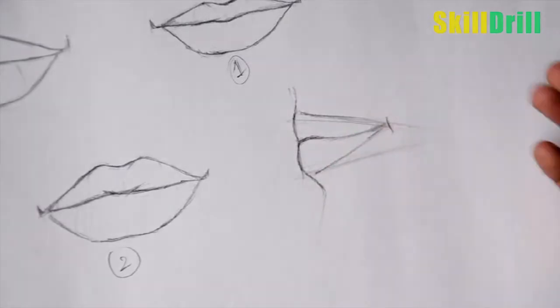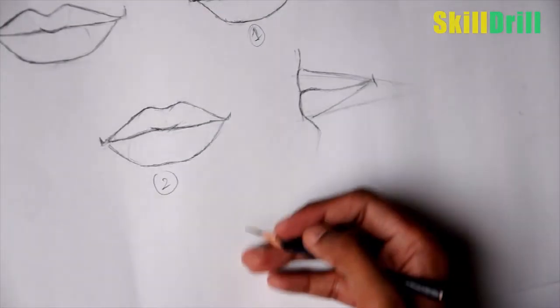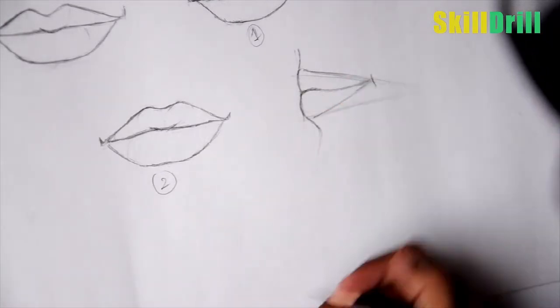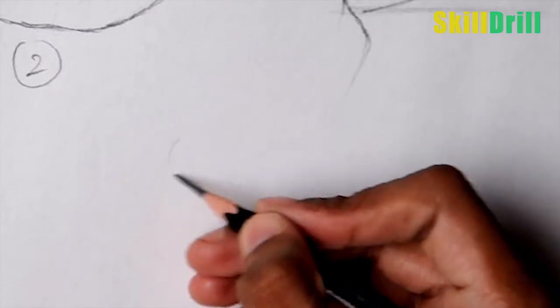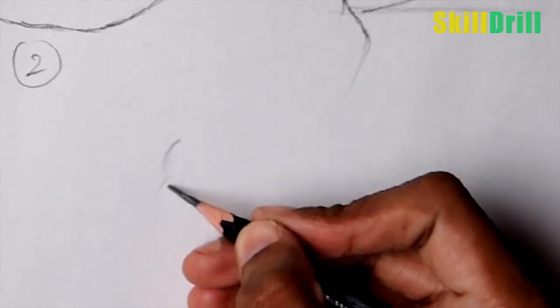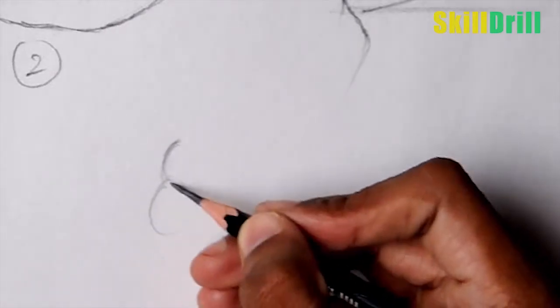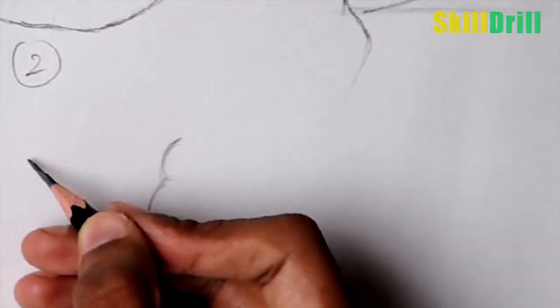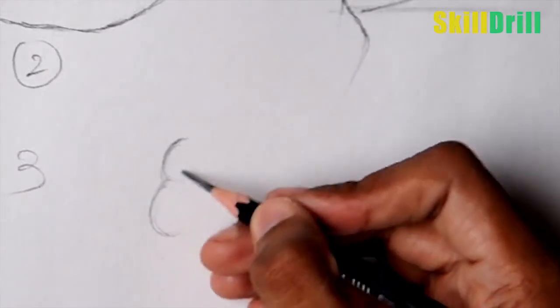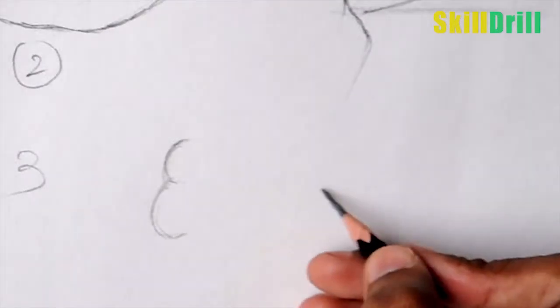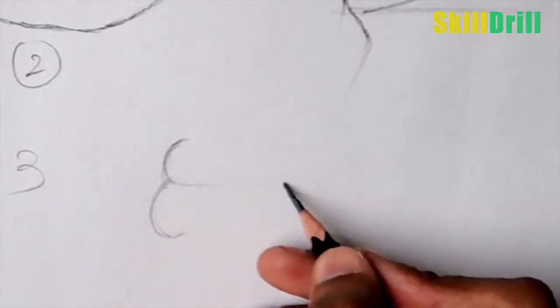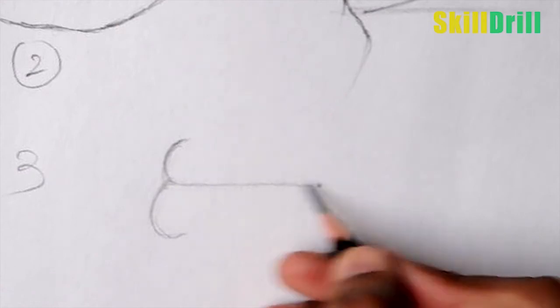So this one is from the side part. Another technique for the side angle of the lips is this shape. You can make an inverted 3 first. This is our 3, and we have to make an inverted 3 just like this, and a point till here.